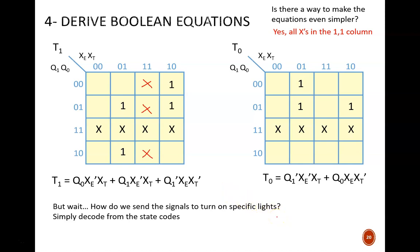This means that when the state code reads 00, then the green light should be on. Therefore, the equation for green light is Q1 prime Q0 prime. Similarly, when the state code reads 01, the yellow light should be on. Therefore, its equation is just Q1 prime Q0. Likewise, the final equation is ZR equals Q1 Q0 prime.